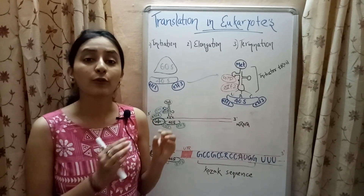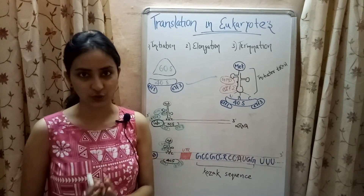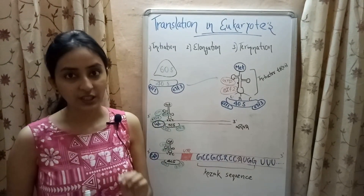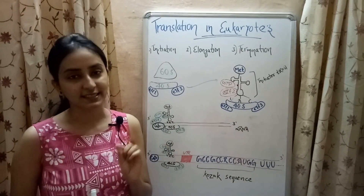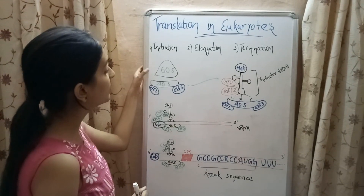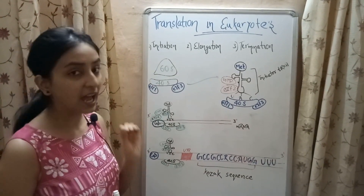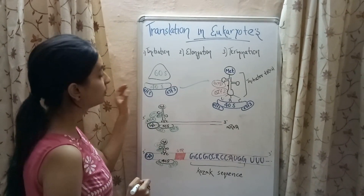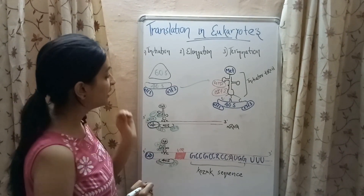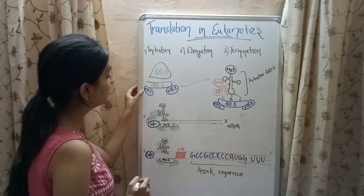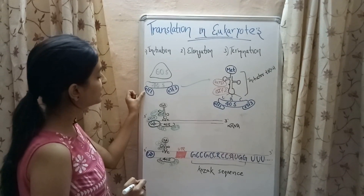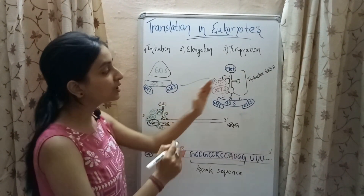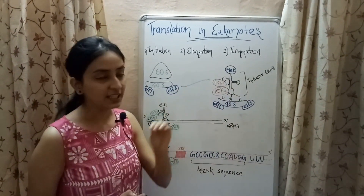The ribosome involved in eukaryotic translation is an 80S type ribosome, consisting of a larger 60S subunit and a smaller 40S subunit. The 40S subunit of the ribosome, with the help of initiation factors known as eIF1 and eIF3, is recruited to the initiated tRNA containing methionine.